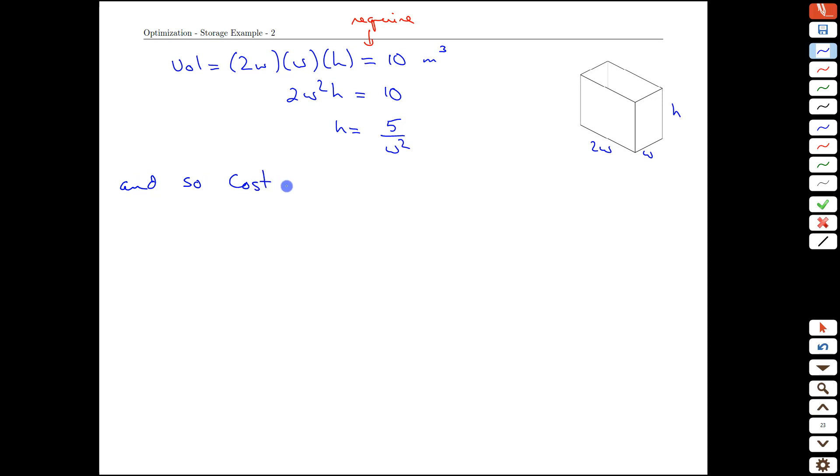And so our cost function, which is equal to 20w squared plus 36w times h, we can now replace our height with this volume constraint value. And we end up with 36w, and then the h gets replaced with 5 over w squared. Keep going. We end up with 180 over w. We can write this as cost as a function of w.